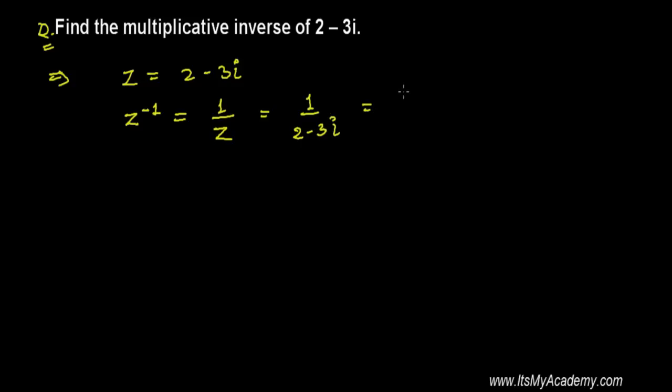All right, and next what I'm doing is I'm going to divide and multiply by the conjugate of this z. So 1 over 2-3i times 2 plus 3i, because conjugate is always opposite of the sign that you get in the complex number.